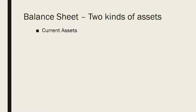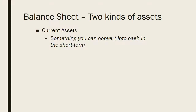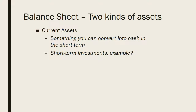Current assets are something that you can convert into cash, or that is cash — something you can convert into cash in the short term quite easily. So what are some examples? A checking account, a savings account, things like stocks or bonds — you can usually sell those relatively easily.